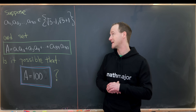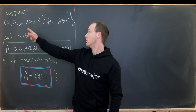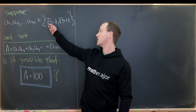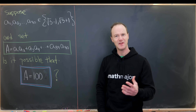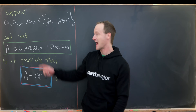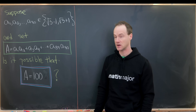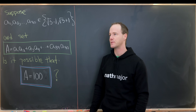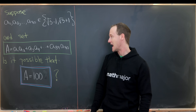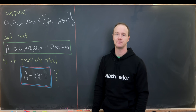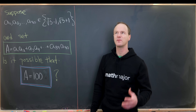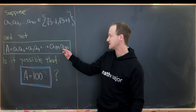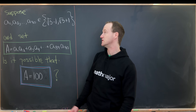We want to take 90 numbers written as a1, a2, up to a90, that can take on two different values: the square root of 3 minus 1 and the square root of 3 plus 1. Then we set capital A to be the sum of pairwise products — specifically, a1 times a2 plus a3 times a4, continuing as a5 times a6, ending at a89 times a90. The first question we'll answer is: is it possible that this number equals 100 by cleverly choosing these little a's?